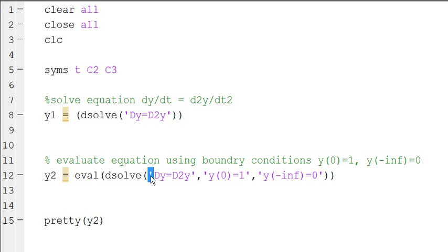No, parentheses, yeah, whatever that's called, I forget. DY is equal to D2Y. And then we're going to comma and define our boundary conditions the way we just did.